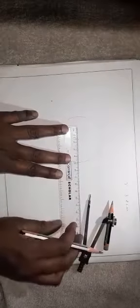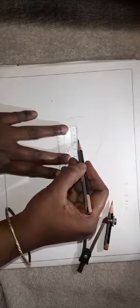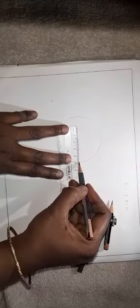Then, take your scale, center to the circle, draw a line. So, this is P. So, O, P is a radius. R equal to 3.2 centimeters.